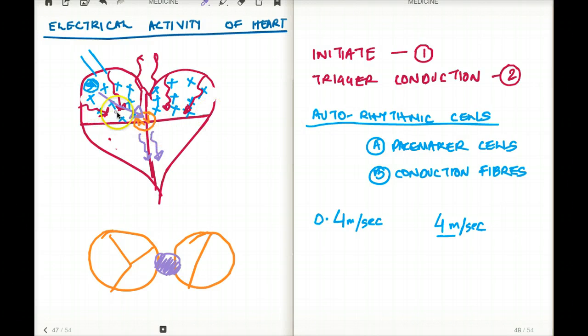So once this depolarization hits the AV node, the AV node cannot depolarize again. It needs a refractory period before it can depolarize, and that is what's responsible for the time lag, which is allowing the depolarization to pass a little slower to the AV node than expected.